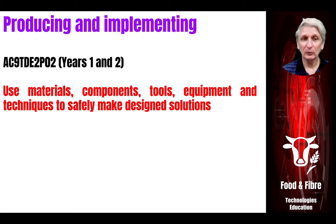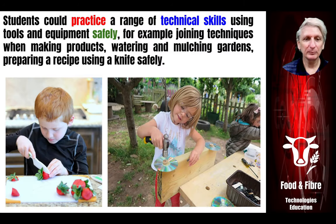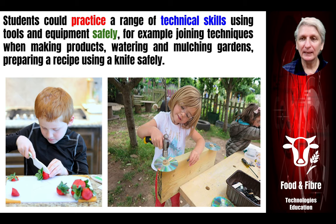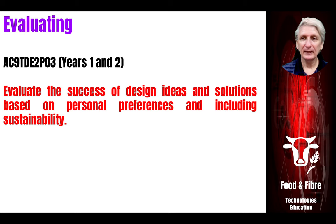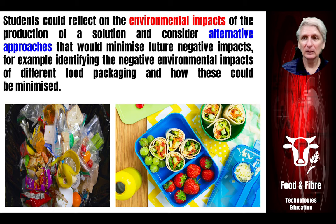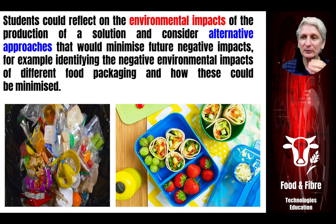Then they need to go through a process of producing and implementing. They could practice various techniques such as cutting for food preparation, or shoveling, mulching and watering — these are technical skills students will need to learn. Then they need to go through an evaluation stage — evaluating and looking at alternatives, looking at the potential environmental impact, looking at packaging and ways of using other types of containers instead of having everything individually packaged with throwaway plastic packaging.